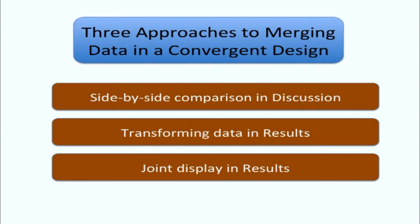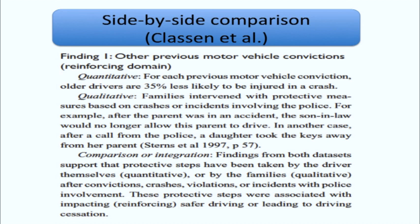I'm going to talk about three strategies for merging that are part of this design. I call them: side-by-side comparison of the two databases, transforming data, and creating a joint display. These are three techniques that have emerged when people compare quantitative and qualitative data in a convergent design. For side-by-side comparison, looking at a passage from an article by Klassen on older driver safety, in the results section the findings on previous motor vehicle convictions are arrayed — first the quantitative results, then the qualitative results, then a comparison of the two.